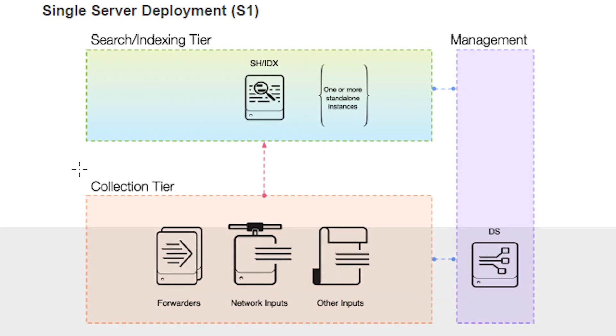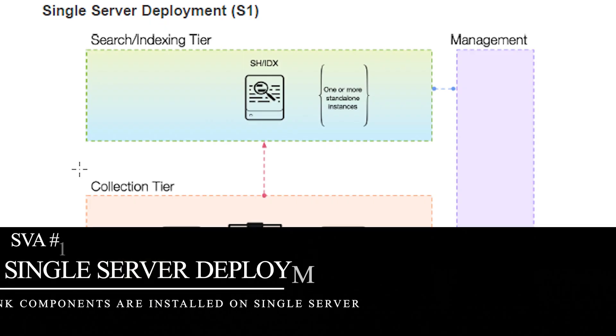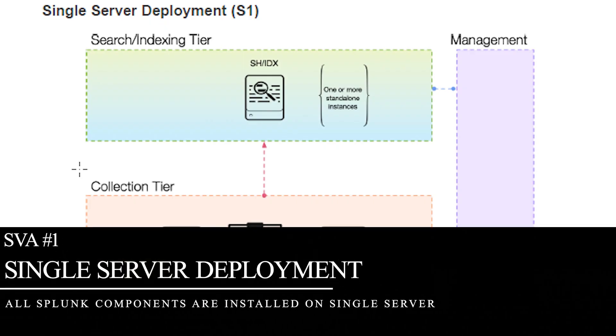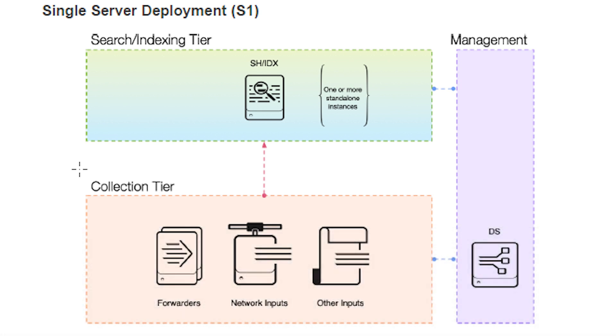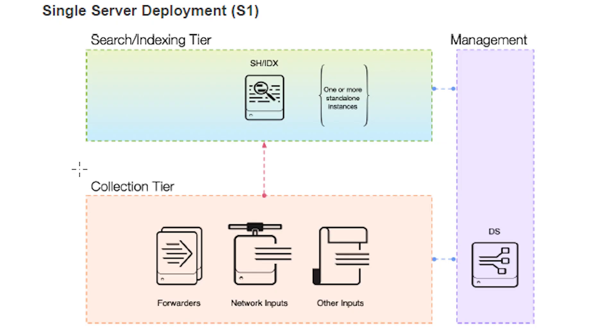The first SVA is called the Single Server Deployment. All Splunk components, from indexing and licensing to searching, are installed on a single server. This is a great way to get started in Splunk if the reasons you use Splunk are not mission critical. Because this is a single server architecture, there is no redundancy. This means when it comes time to patch Splunk or the operating system, Splunk will be offline during that period. No logs will be collected, no searches will be run, no alerts are going to be fired.